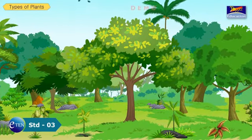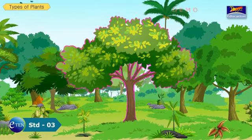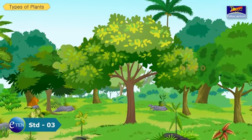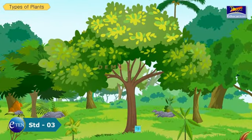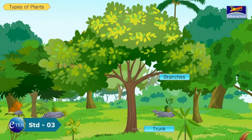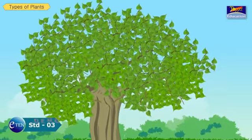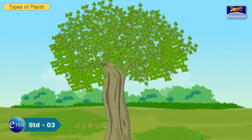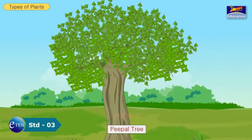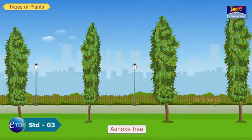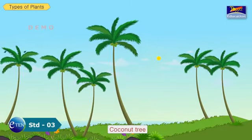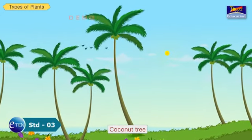Types of Plants. We have learnt about different types of plants in earlier classes. Let's quickly recall them. Tall and strong plants are called trees. They have a thick brown and woody stem called trunk. Branches and leaves give shape to the tree. Trees differ in shape and size. A peepal tree is round, whereas a ashoka tree is conical in shape.